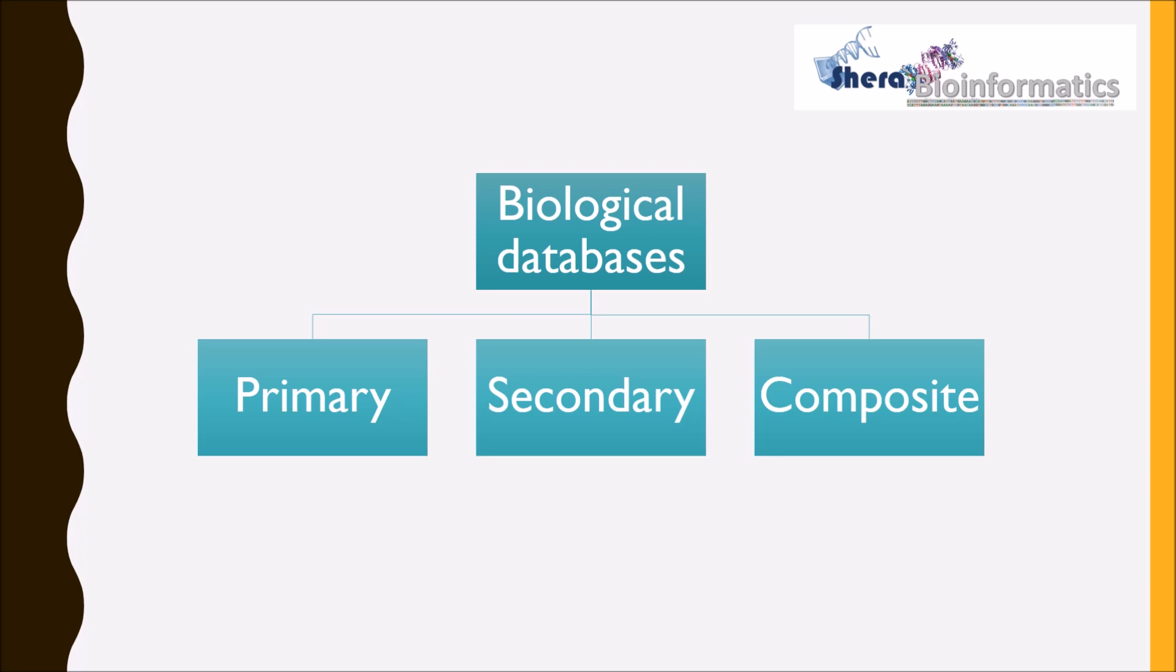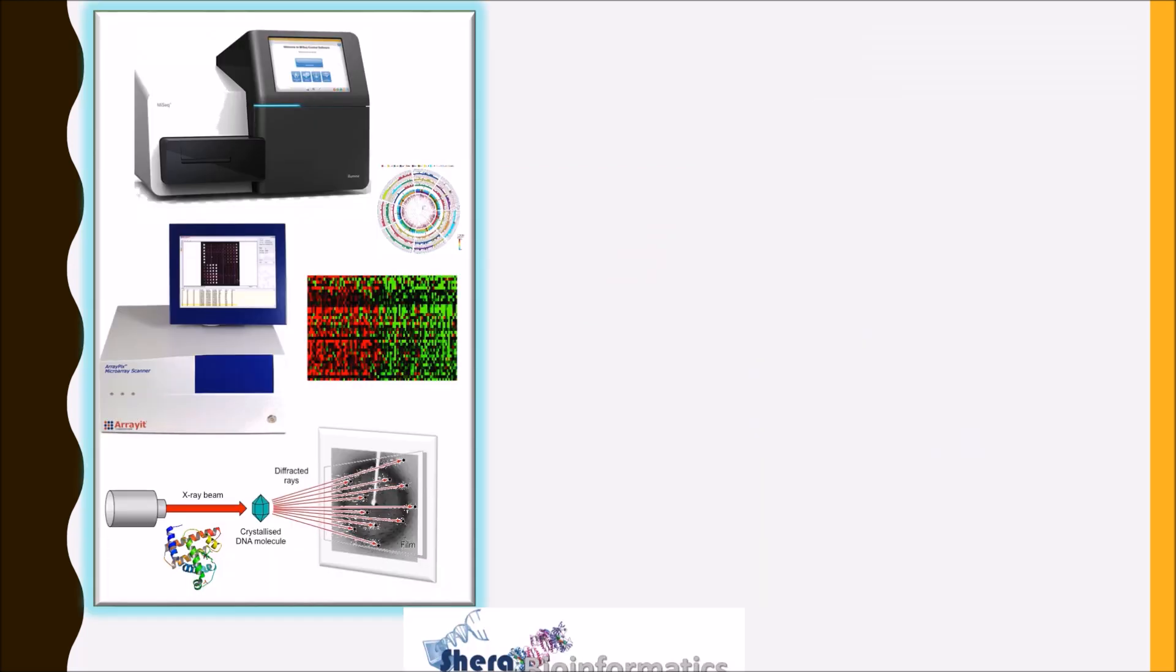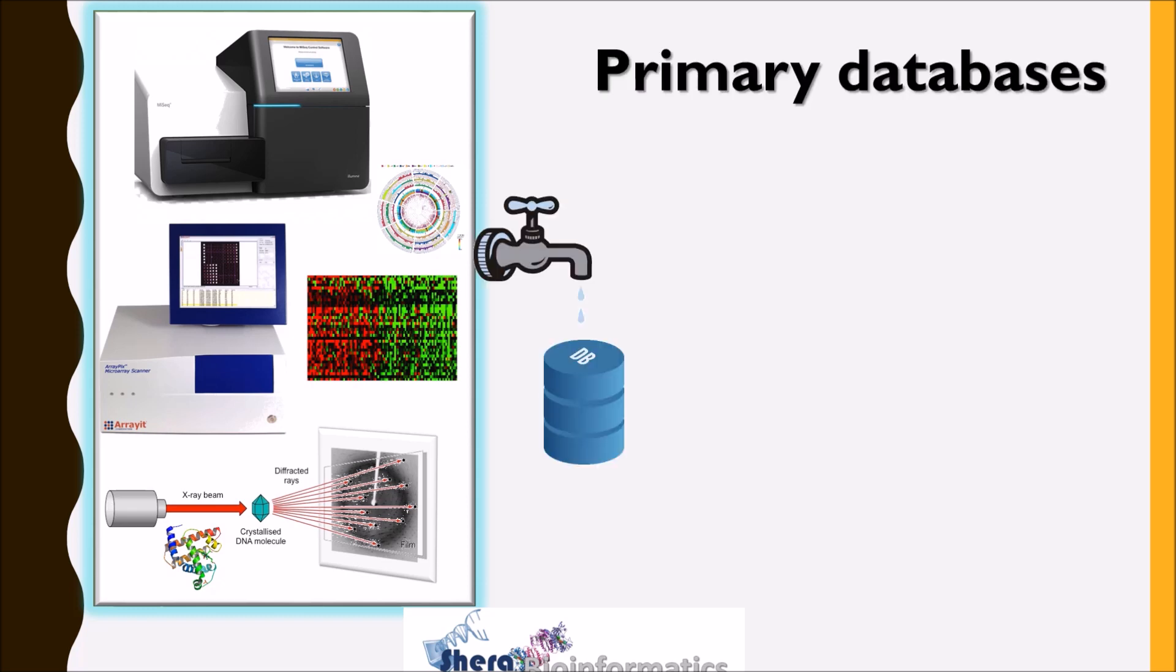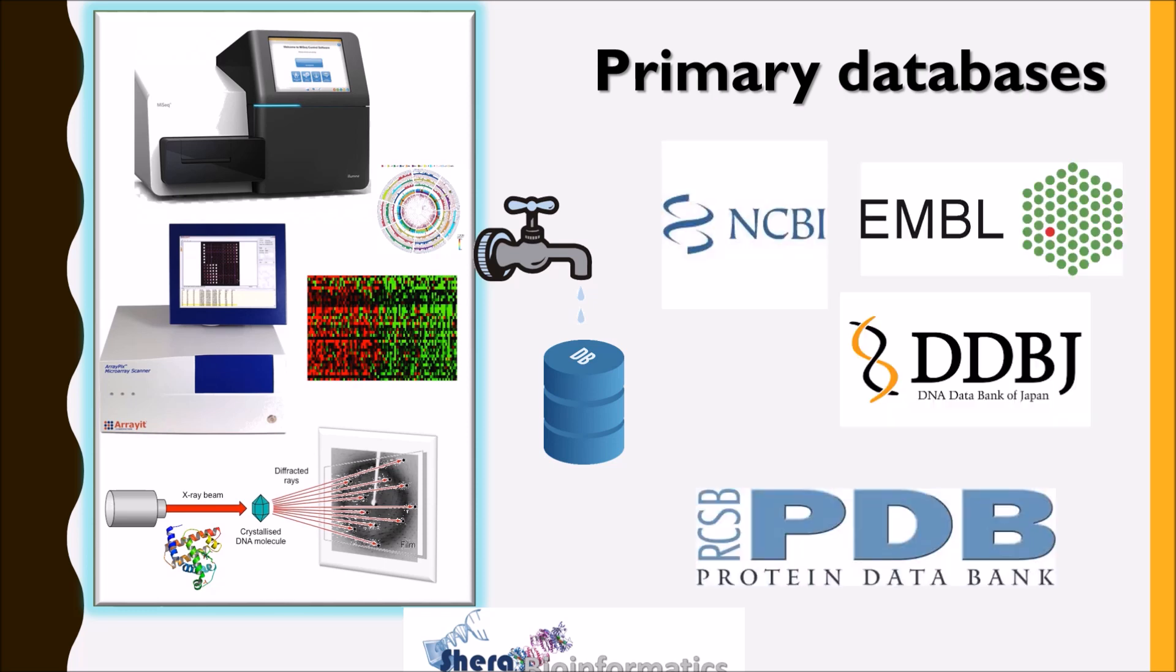Biological databases can be classified into primary, secondary, and composite. Primary databases are those biological databases in which experimental results are directly submitted into the database. Examples include NCBI, EMBL, DDBJ, and PDB database.